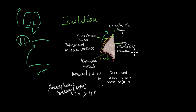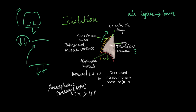The increased lung volume is significant because the air inside the lungs exerts a pressure called intrapulmonary pressure. As the lung volume increases, the molecules of air inside have more space to move around, so they don't bump into each other as frequently, which decreases the intrapulmonary pressure.